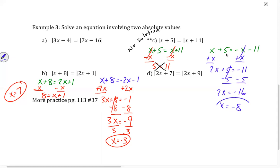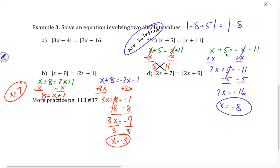So we have no solution on one side and x equals negative 8 on the other. Let's check it. The left side has no solution — if you have a number and add 5, versus that same number and add 11, they won't be the same. For negative 8: the absolute value of negative 8 plus 5 equals the absolute value of negative 8 plus 11. That's the absolute value of negative 3 equals the absolute value of positive 3 — yes, that's true. So for this problem, I only have one solution.